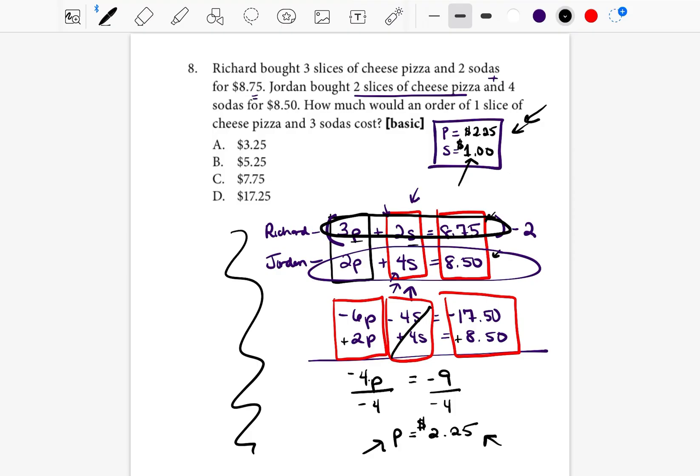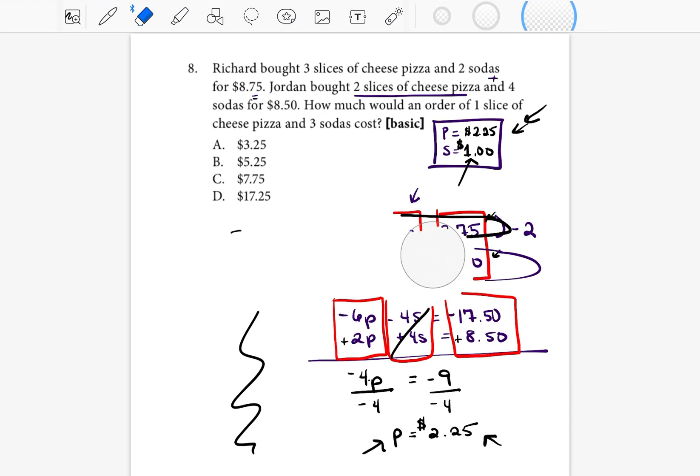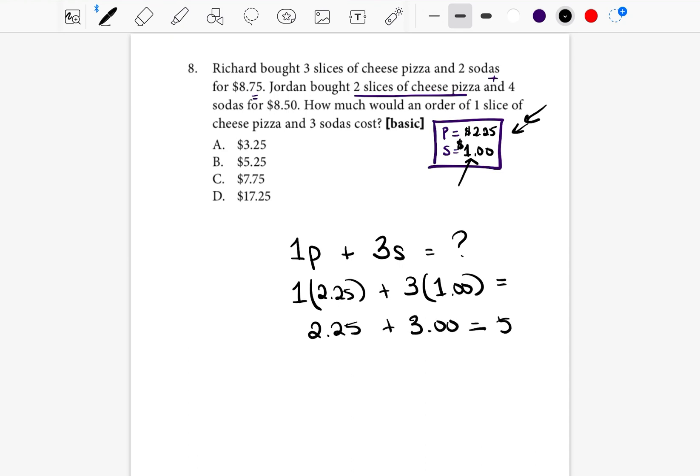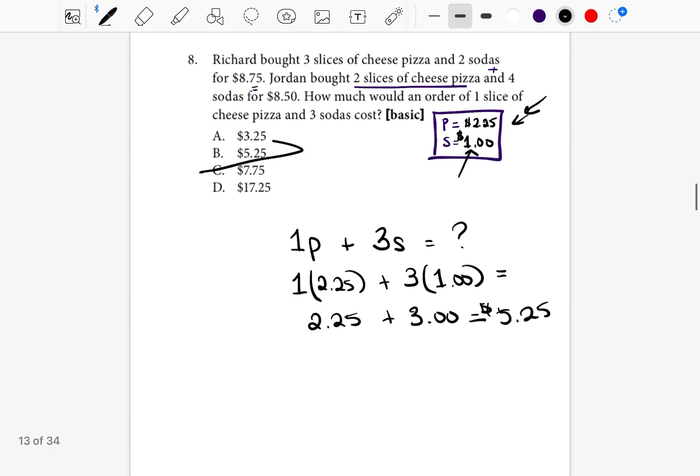Now we know how much pizza costs and now we know how much soda costs. So now when they say, how much would an order of one slice of pizza and three sodas cost, we can figure that out. So one slice of pizza, 1P, plus three sodas, 3S, how much is that equal to? Just insert how much is pizza, $2.25, plus how much is a soda, $1, and see what that is equal to. So 1 times $2.25 is $2.25, 3 times $1 would be $3, and that would equal $5.25. So our answer would be B.